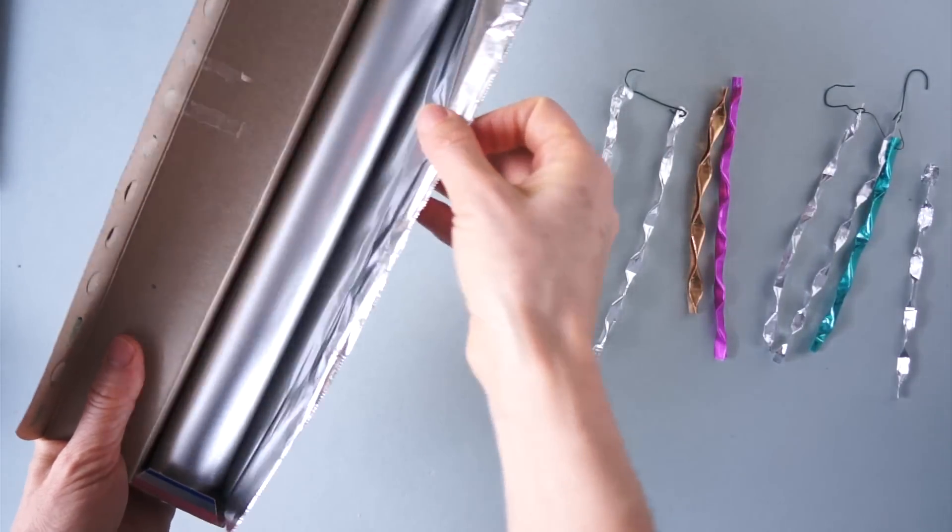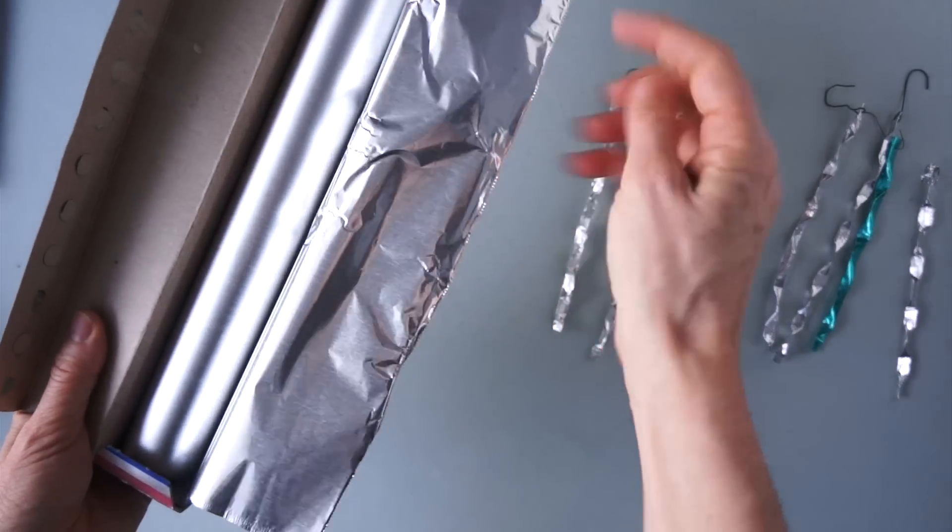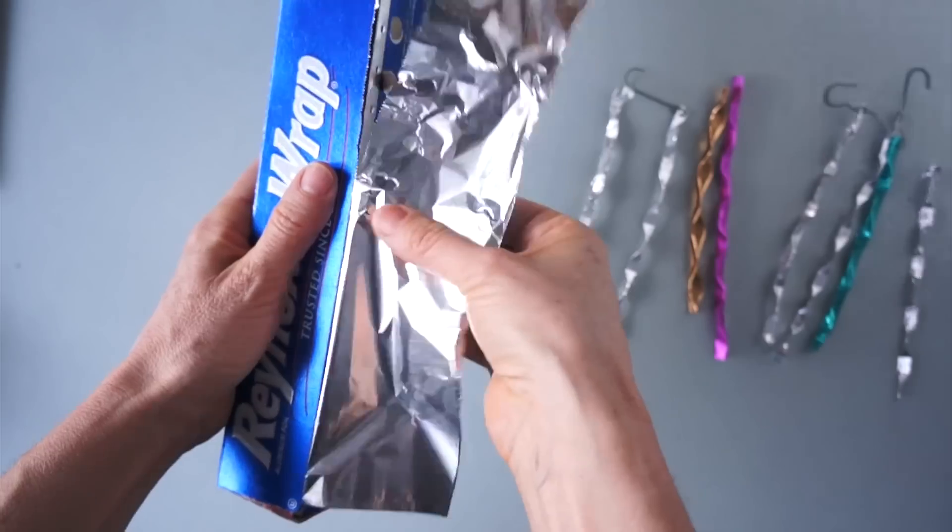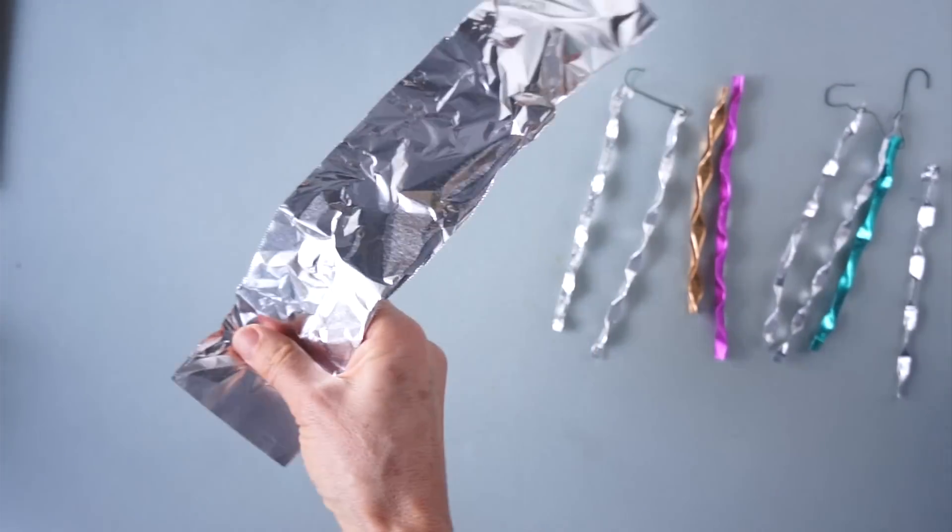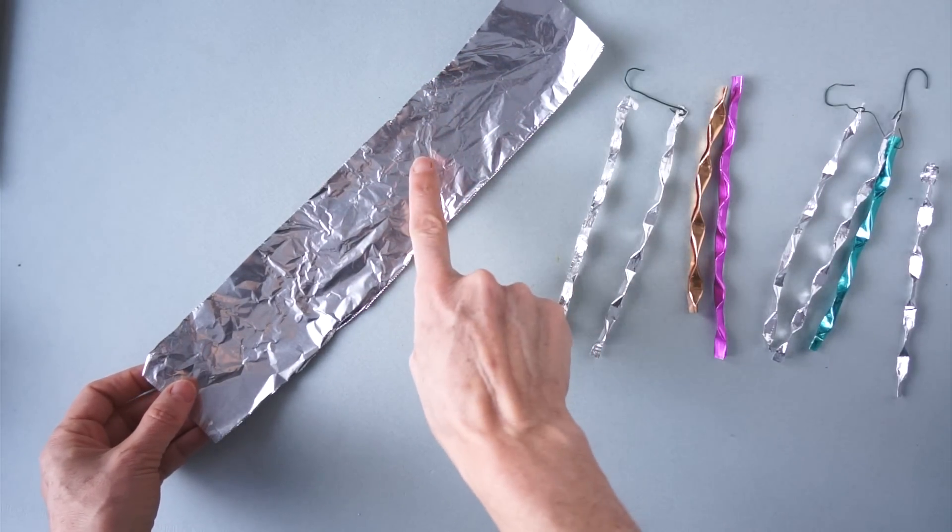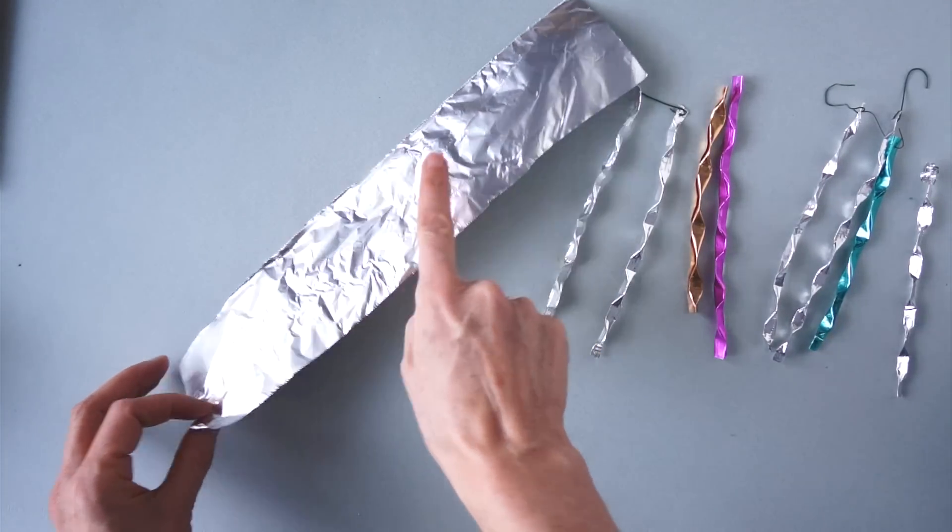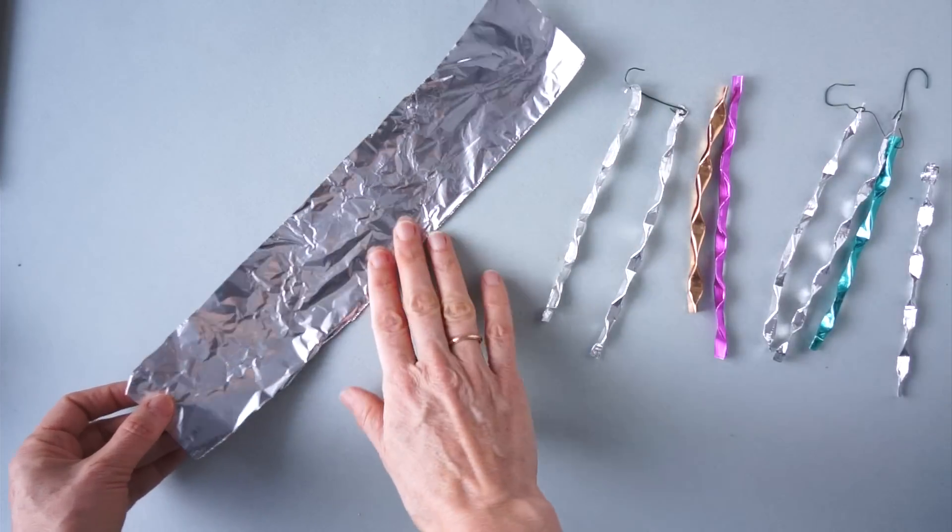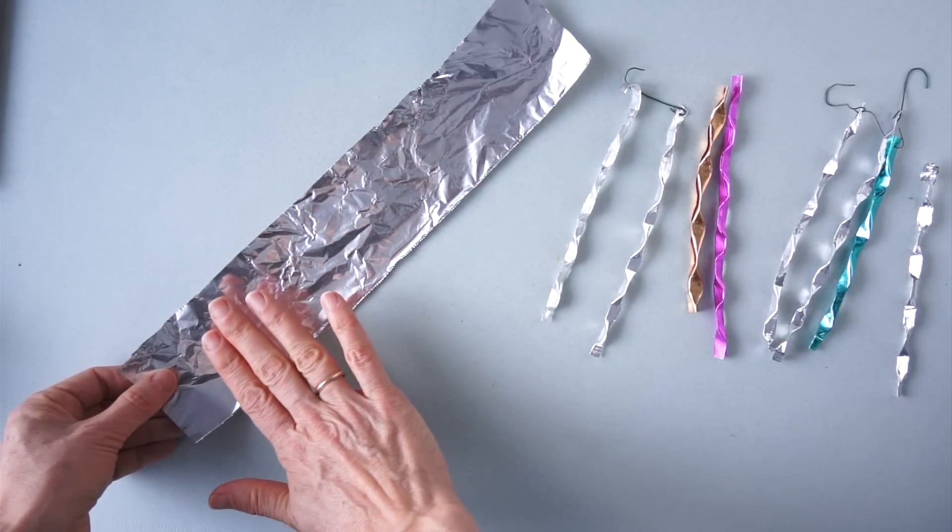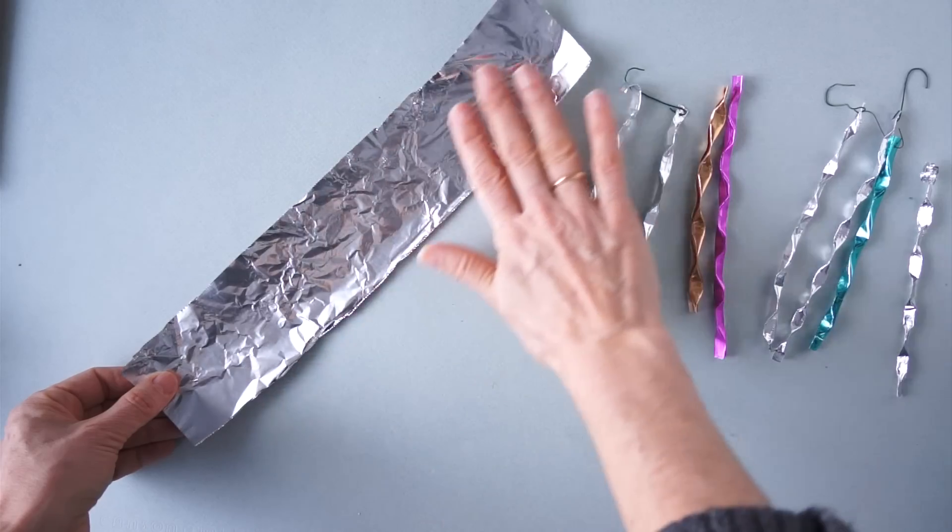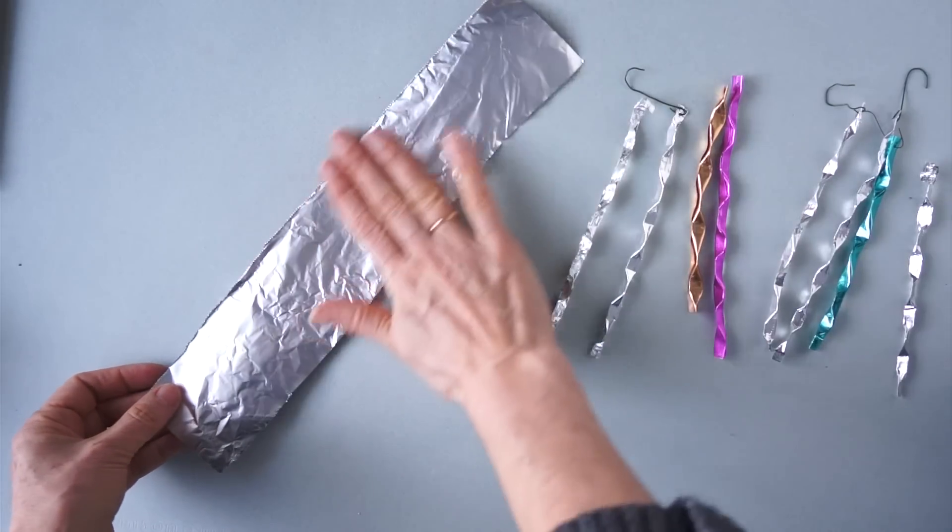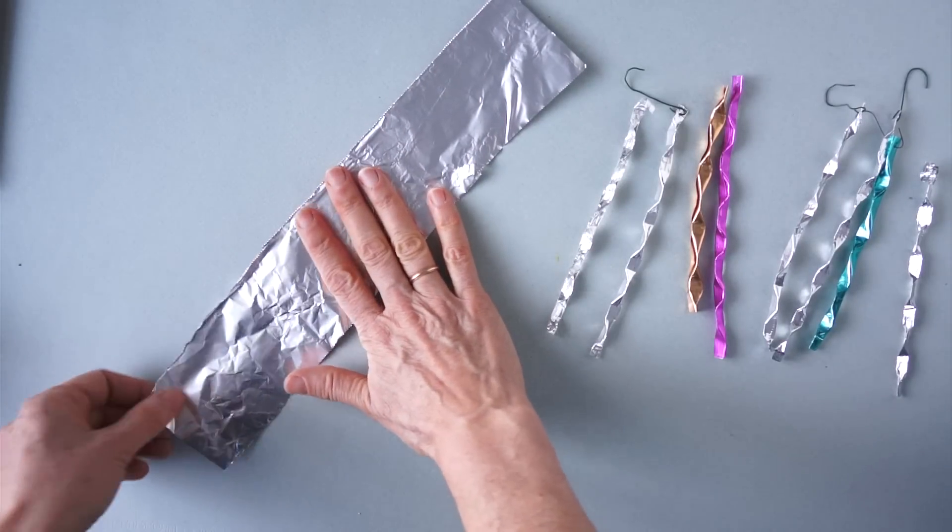We're going to pull a strip about 2 inches wide. The aluminum foil has one side that is shinier and one side that is matte. We can choose, to our taste, which one we prefer. In this case I'm going to leave the shiny side out, visible. So I'm going to turn it over and fold it in half.